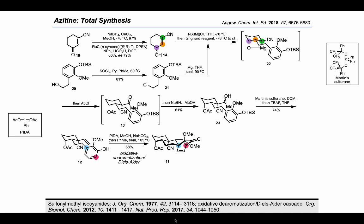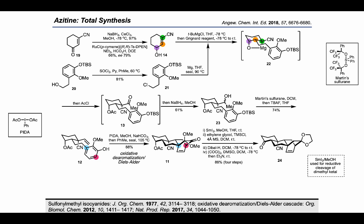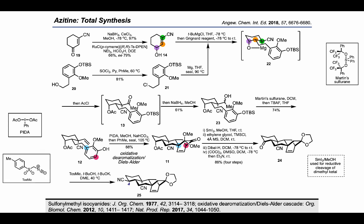The following oxidative dearomatization and intramolecular Diels-Alder reaction reacted very well to give 88% yield of the tetracyclic intermediate. Then four steps were used to simplify the structure and compound 24 was reached. To install the quaternary center at C4 position, the Van Leusen reaction was used. This reaction is especially used to transform a ketone into a nitrile. Under standard conditions, compound 25 was obtained. Then, deprotonation followed by methylation afforded the final intermediate in 68% yield.